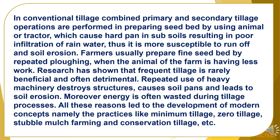In conventional tillage, combined primary and secondary tillage operations are performed in preparing a seedbed by using animals or tractors, which cause hardpan in subsoils resulting in poor infiltration of water. Thus, it is more susceptible to runoff and soil erosion. Farmers usually prepare a fine seedbed by repeated plowing when the farm animals are having less work. Research has shown that frequent tillage is rarely beneficial and often detrimental. Repeated use of heavy machinery destroys soil structure, causes soil pans, and leads to soil erosion. Moreover, energy is often wasted during the tillage process.